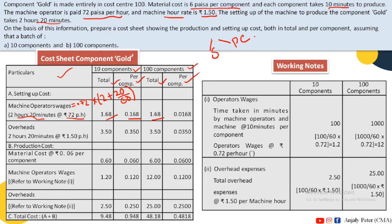For setting up overhead cost using machine hours: machine hour rate is ₹1.50 per hour, setup time is 2 hours 20 minutes. Overhead = (2 + 20/60) × 1.50 = ₹3.50. For 10 components: total overhead = ₹3.50, per component = 3.50 ÷ 10 = ₹0.350. For 100 components: total overhead = ₹3.50, per component = 3.50 ÷ 100 = ₹0.0350. Setting up cost per component differs between batch sizes.